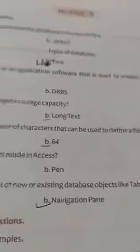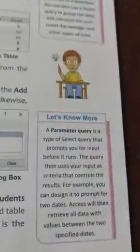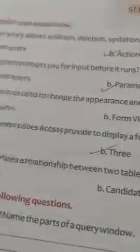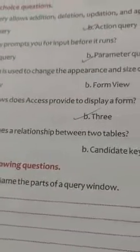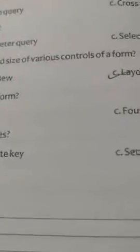These are the MCQ questions of Chapter 2. Now in Chapter 3, working with queries, forms, and reports. The objective questions here: which query allows you to perform addition, deletion, and appending operations on data? The answer is action queries. Which queries prompt you for input before they run? The answer is parameter queries.